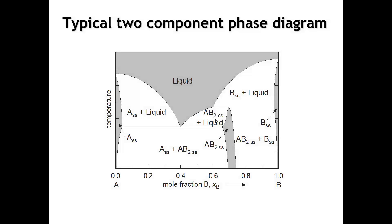If we're going to talk about realistic phase diagrams, we oftentimes have not just compound formation but the compounds and end members can also form solid solutions, as shown on this diagram. So not every intermediate composition is going to be a line phase present as a vertical line on the phase diagram — oftentimes there would be some solid solution that forms around those intermediate compositions.